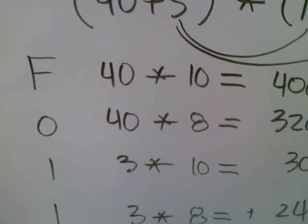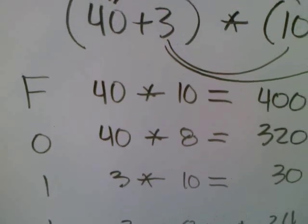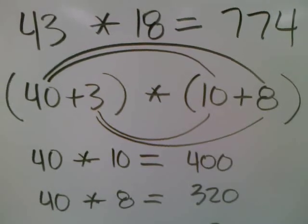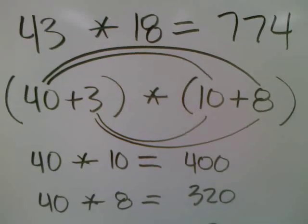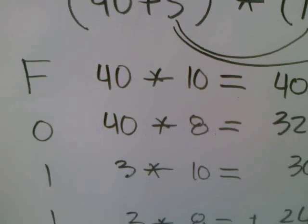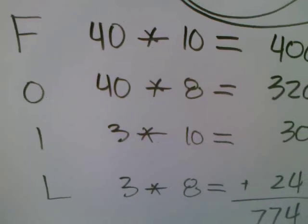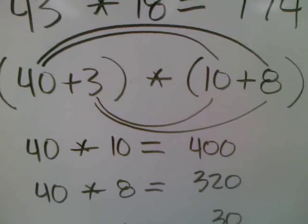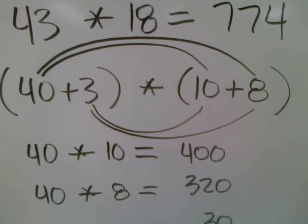The second letter O stands for outside. The outside numbers in the example problem are 40 and 8. Write down 40 times 8. The third letter I stands for inside. The inside numbers in the example problem are the 3 and the 10.